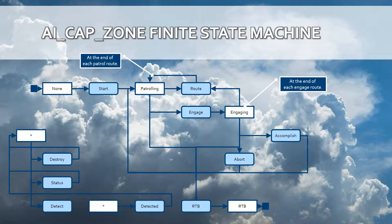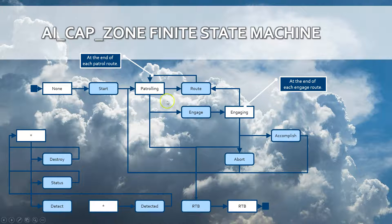The AI-CAP-ZONE is basically a state machine that will route an AI through a patrol zone. While patrolling it will detect targets and it will check the status of the AI, meaning does it have enough fuel and isn't it damaged. If the fuel is empty or it is being damaged, then the AI will be returned to base.